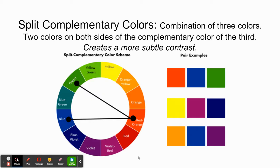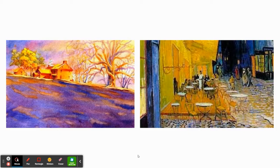Split complementary colors are a combination of three colors. Instead of going directly across from one color on the color wheel, you go to the two colors next to what would be the direct opposite. For example, red-orange's split complement is green and blue instead of blue-green. This creates a more dynamic use of complementary colors with a subtle touch, so it's not such an extreme pairing. These are great examples of split complementary color use.